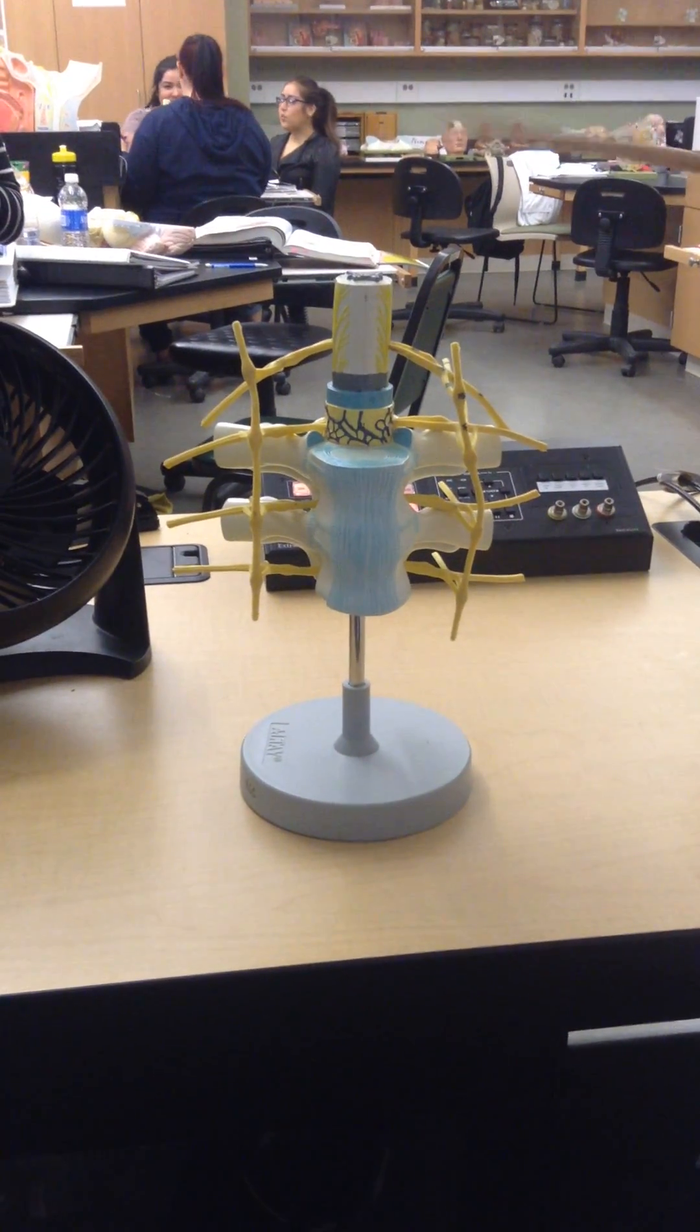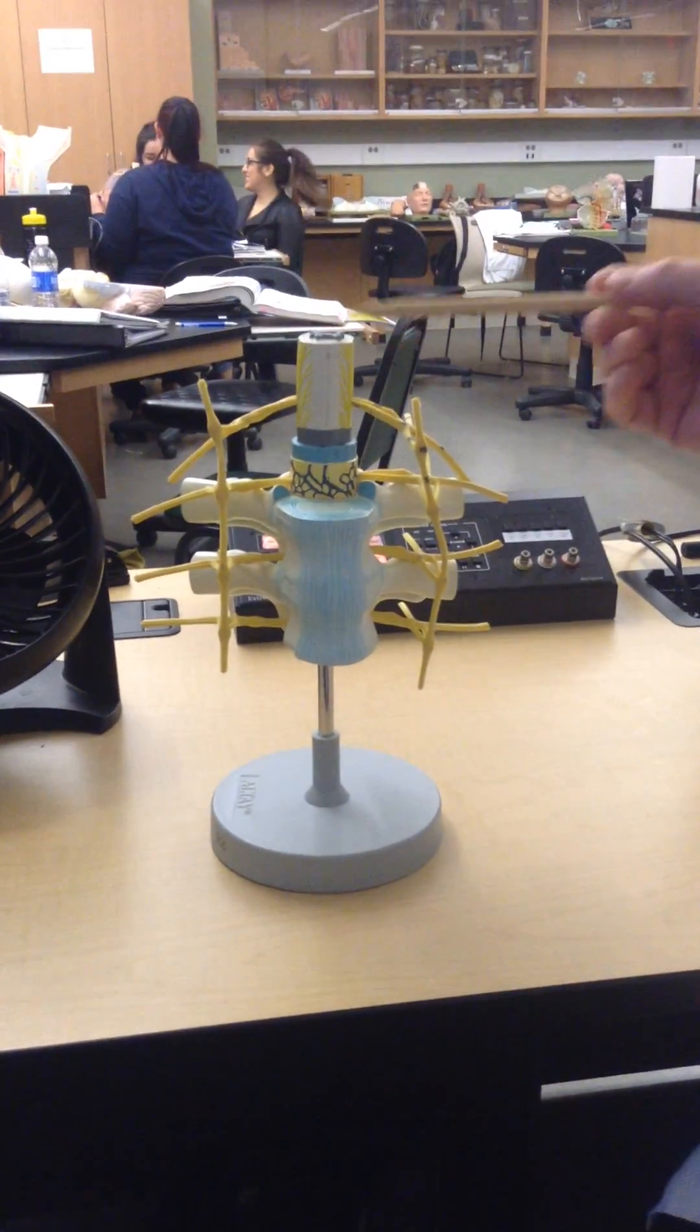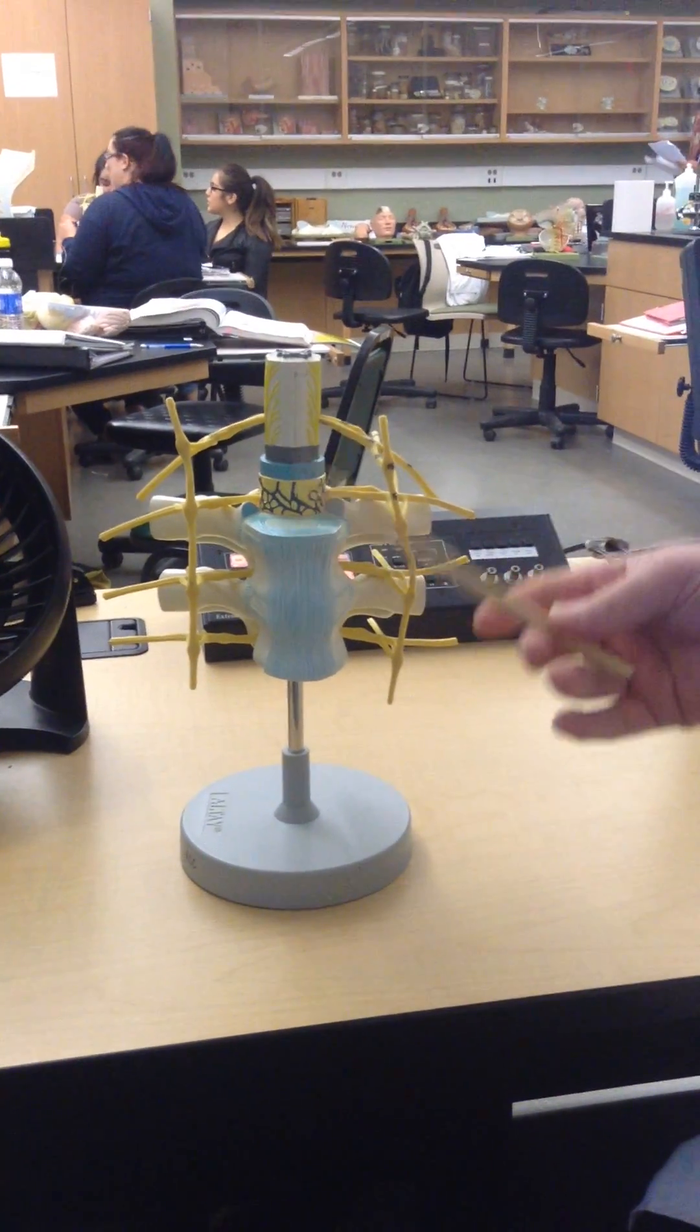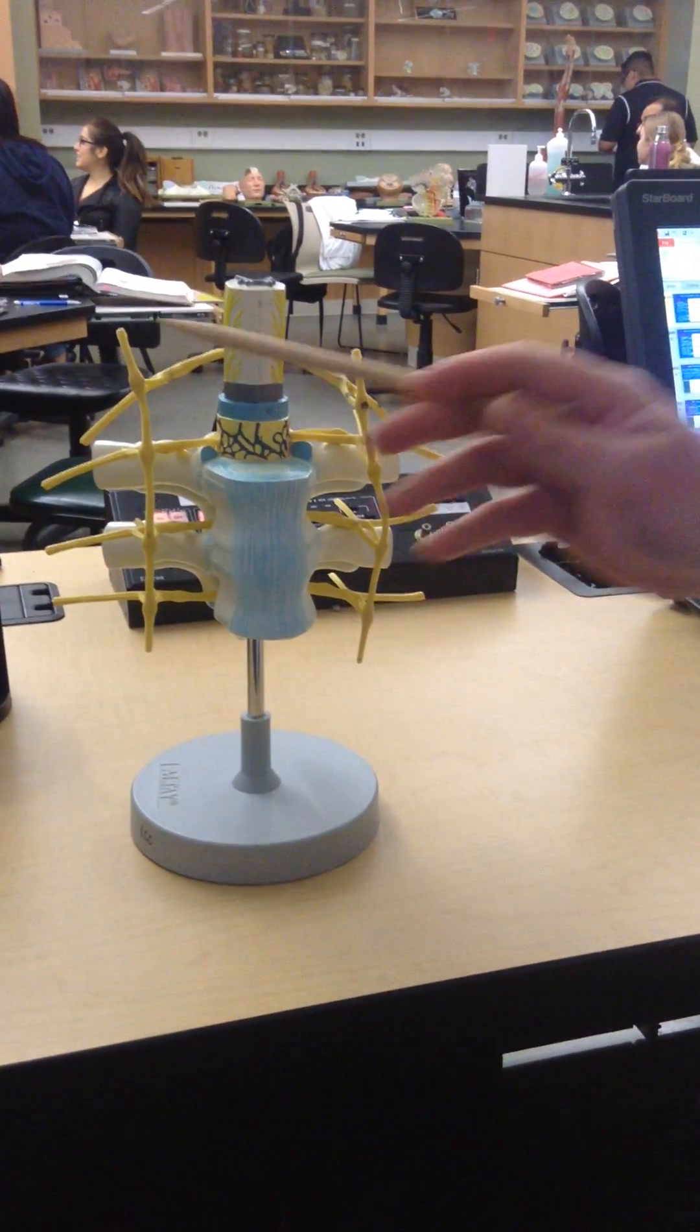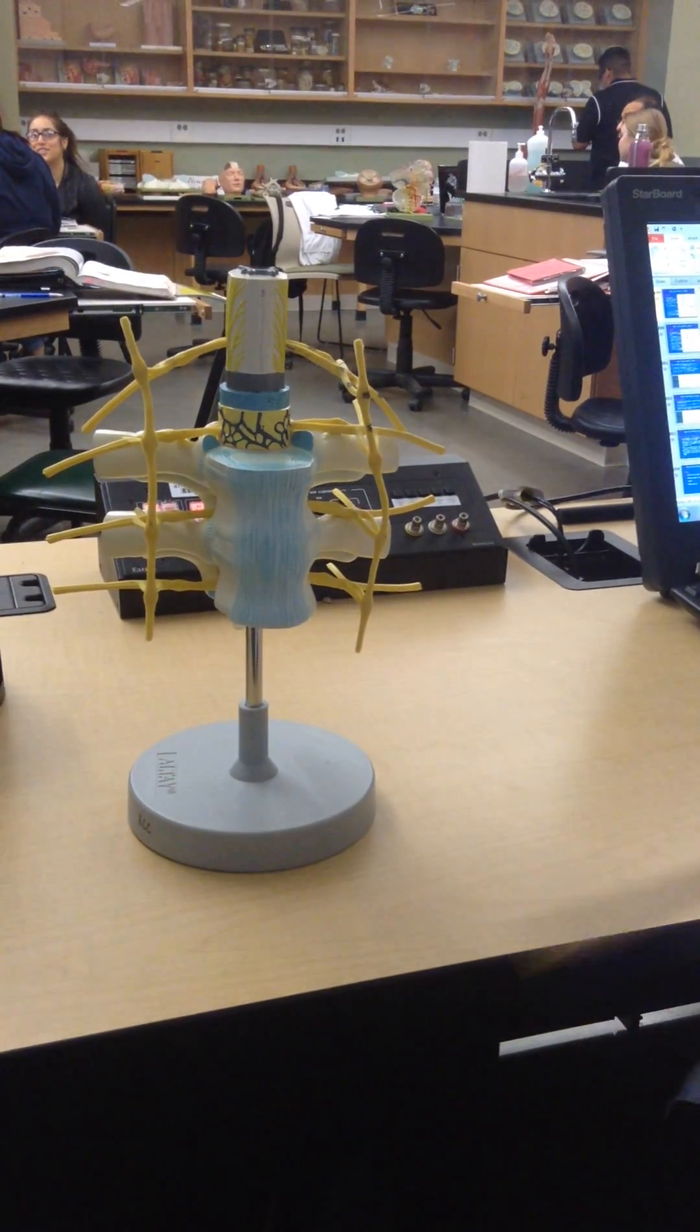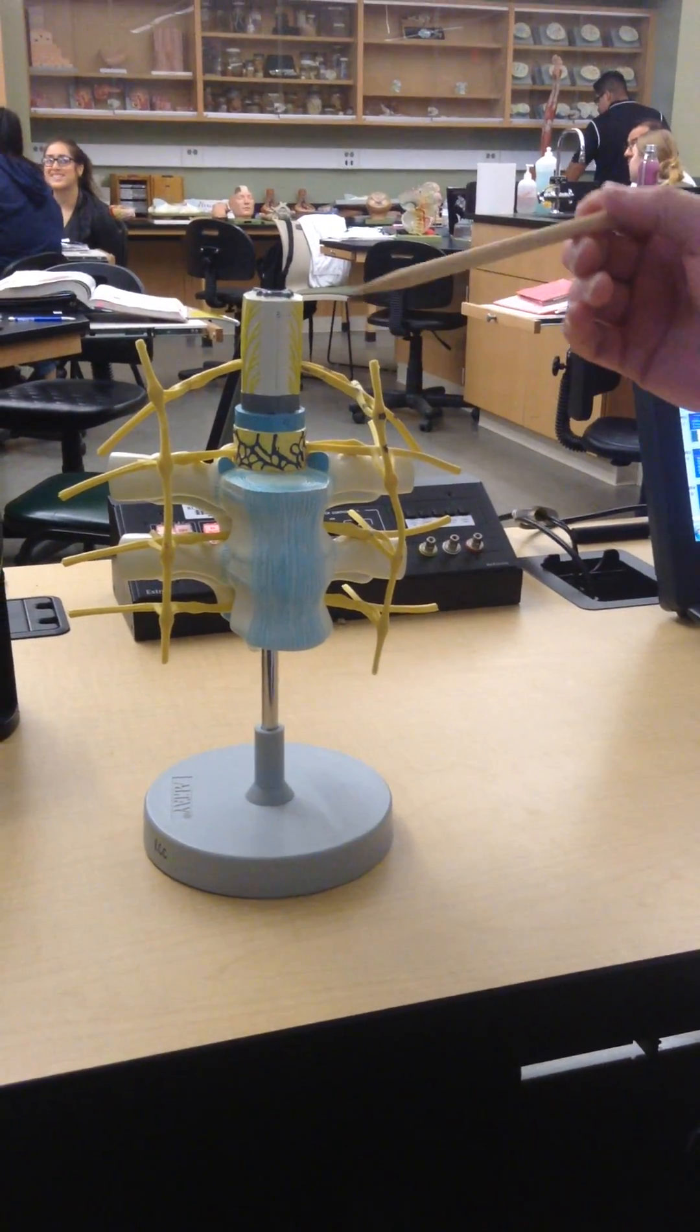All right, so this model represents a number of things: the spinal cord, the CNS, the vertebral column, but what we're going to use it for is the chain ganglia and the sympathetic thoracolumbar system, or outflow.